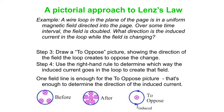With my thumb pointing out of the screen matching the 'to oppose' field line, my fingers swirl in a counterclockwise direction — that's the direction the induced current flows. Remember, the field lines in the before and after pictures come from something external to the loop. The loop itself sets up a current which creates the opposing field; only the field in the 'to oppose' picture is created by the loop's current. That is our introduction to the pictorial approach to Lenz's Law for determining which way the induced current goes around a coil or loop.